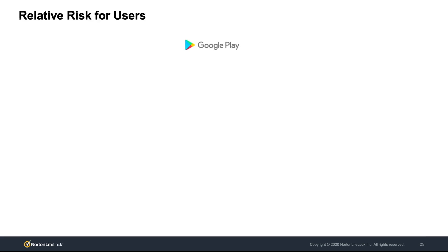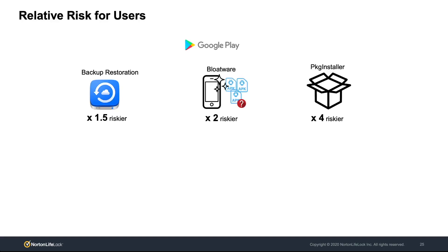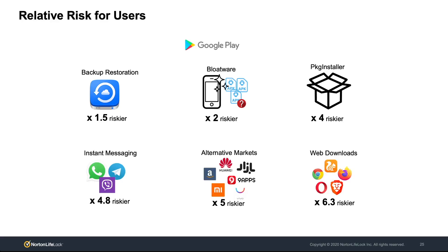I would also like to show the relative risk of the main distribution vectors in comparison to Play Store, which is the main distribution vector and also one of the safest. The relative risk really varies. Interestingly, installing apps received via instant messaging is on average five times riskier than from Play Store. And by far, the riskiest proposition for users are web downloads, which can be on average six times riskier.